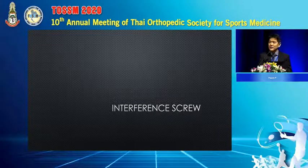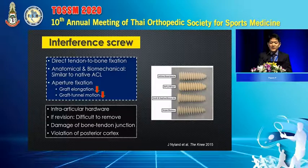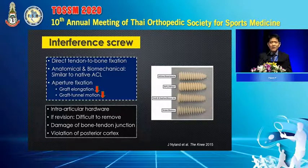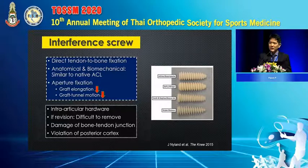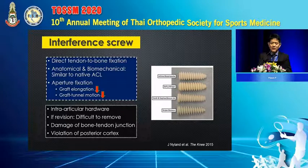The first fixation I will talk about is the Interference Screw. The Interference Screw is a good option — it provides direct tendon-to-bone fixation and is anatomically and biomechanically compatible with native ACL. With interference screw, we can achieve aperture fixation, so creep or graft elongation is lower and graft tunnel motion is lower. We must also consider intraarticular hardware.